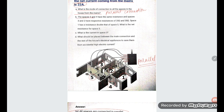Space 5 and space 4 have the same resistance. Space 3 and space 2 have respective resistances of 20 ohms and 30 ohms. Space 1 has resistance double that of space 5. The question asks: what is the net resistance for space 5?